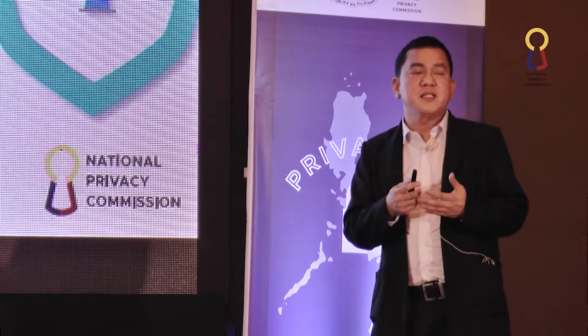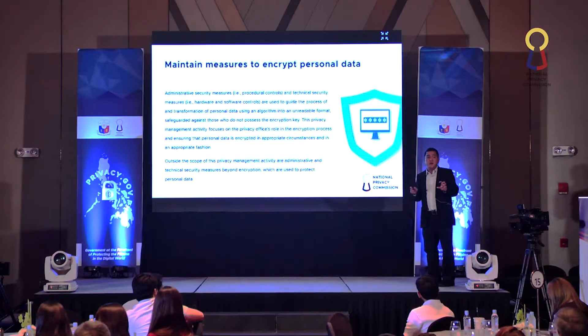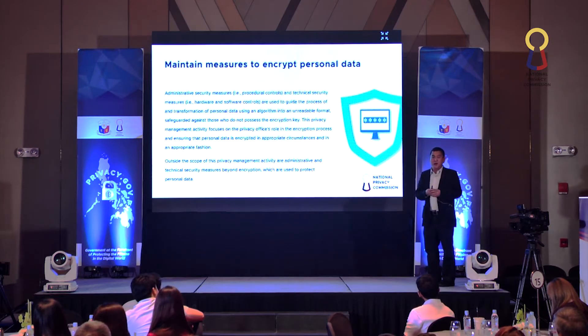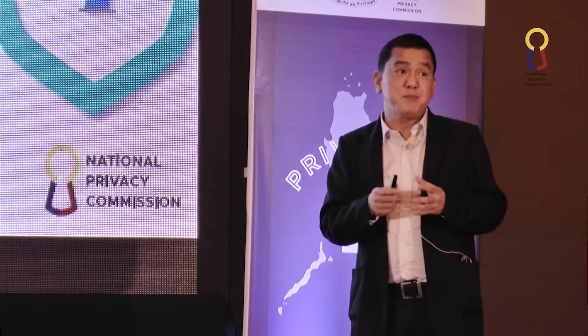In some instances, another security approach for encryption is to break the data in half — separating, for example, name, address, and birthday — into different parts of the personal information, and applying two different algorithms for the encryption of data. In that case, if one half is stolen or hacked, it will not be correlated to the other half of the entire data. So do not encrypt your data as a whole — encrypt your data piece by piece.